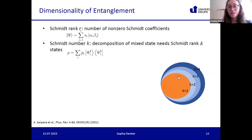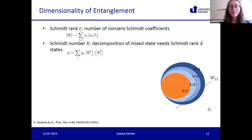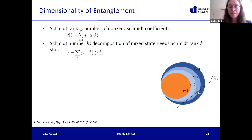The state space picture now shows k=1 as the separable states, with different layers representing different dimensionalities of entanglement. One can then analogously define Schmidt witnesses — for example, a witness certifying Schmidt number three must be positive on all states with Schmidt number two or less, and then detect states beyond that.